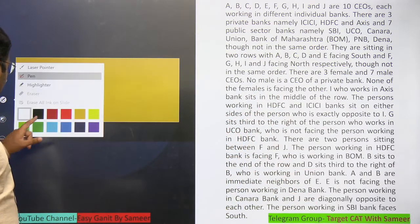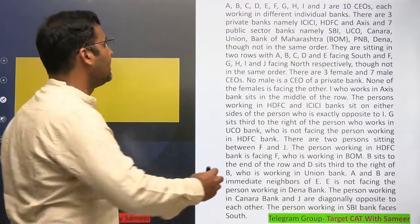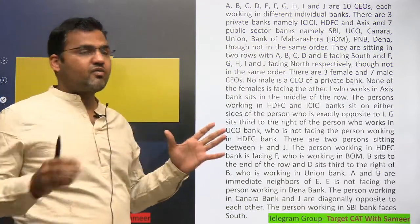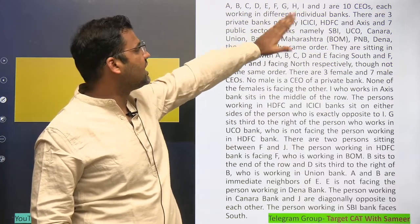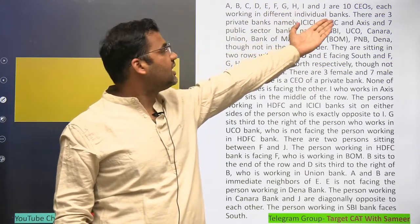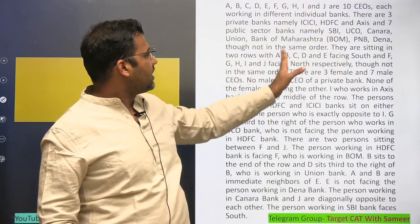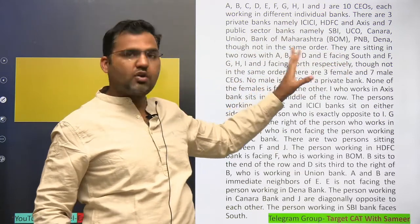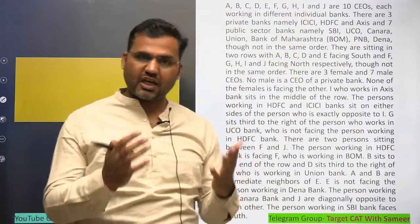The moment you read this type of question you will know it is a sitting arrangement puzzle. The first two or three lines give you the basic idea of the different variables. For example, there are 10 CEOs working in private banks — ICICI, HDFC, Axis — and seven PSU banks, sitting in two rows. A, B, C, D, E are facing south and F, G, H, I, J are facing north respectively.